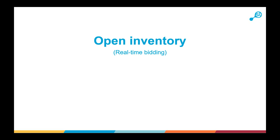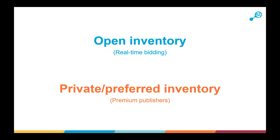In terms of how inventory is bought, there are two key ways. Open inventory — sometimes still called real-time bidding — is available to everyone and works similarly to a PPC Google Ads campaign where you bid and compete on equal footing. Then there's private and preferred inventory: these are premium publishers who have put their ad space on a market specifically for pre-arranged bidding, before it moves to open inventory.